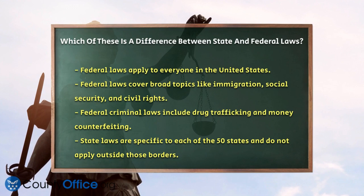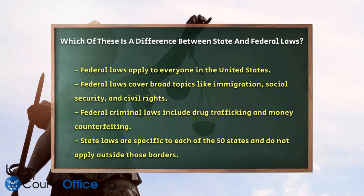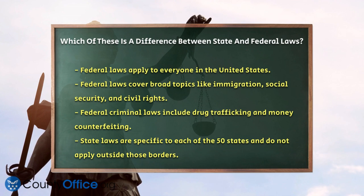First, let's talk about where these laws apply. Federal laws are rules that apply to everyone in the United States. They cover broad topics like immigration, social security, civil rights, and federal criminal laws such as drug trafficking and money counterfeiting.